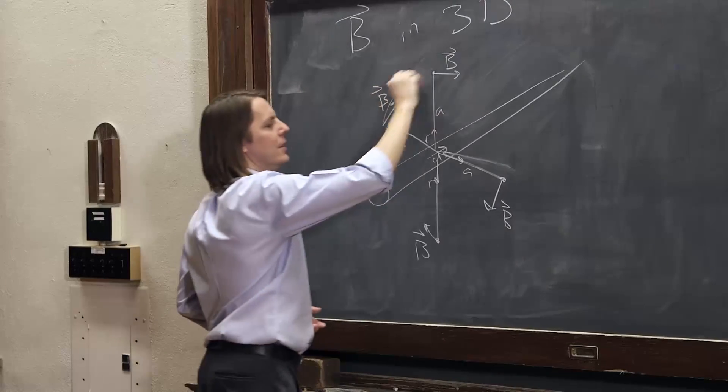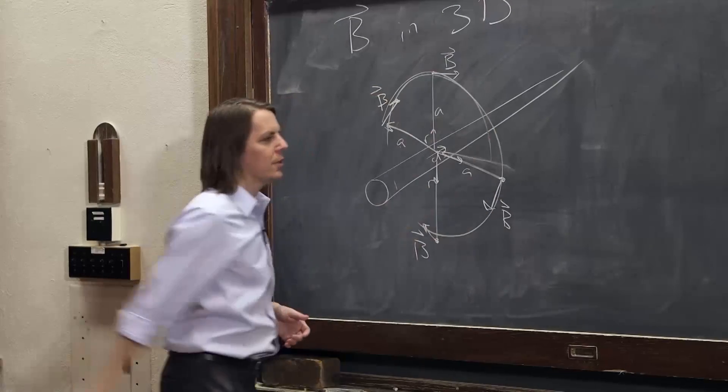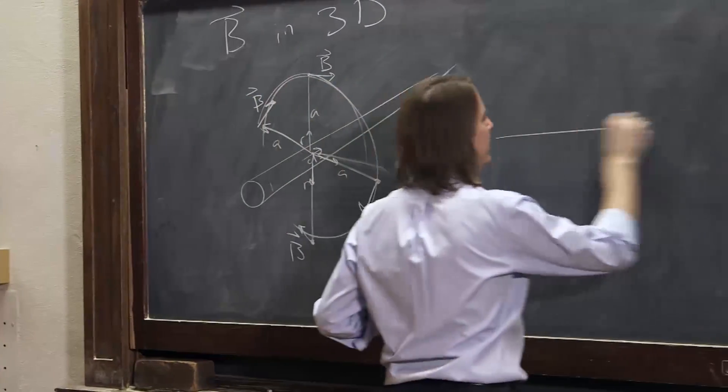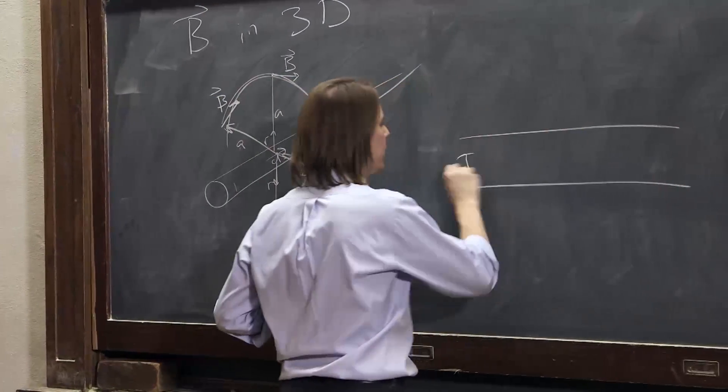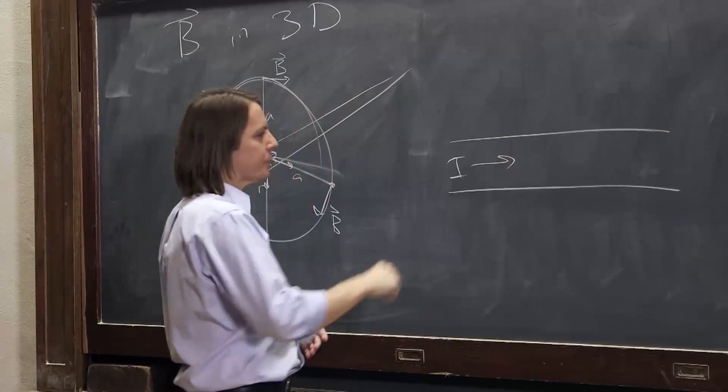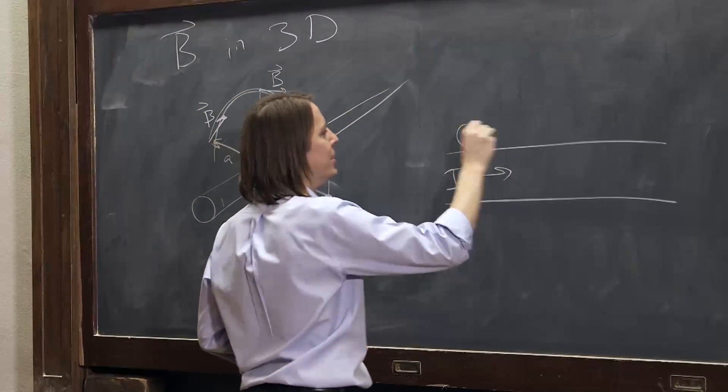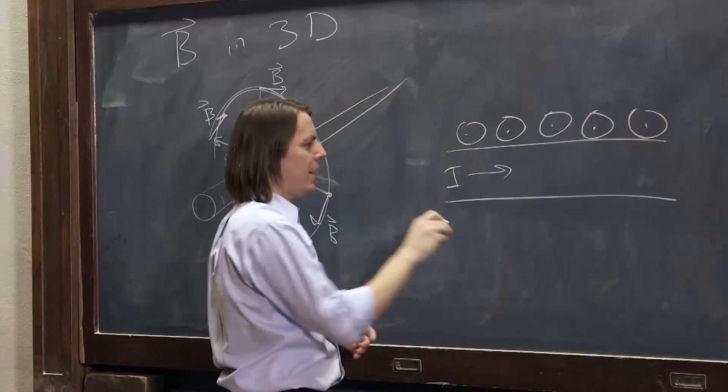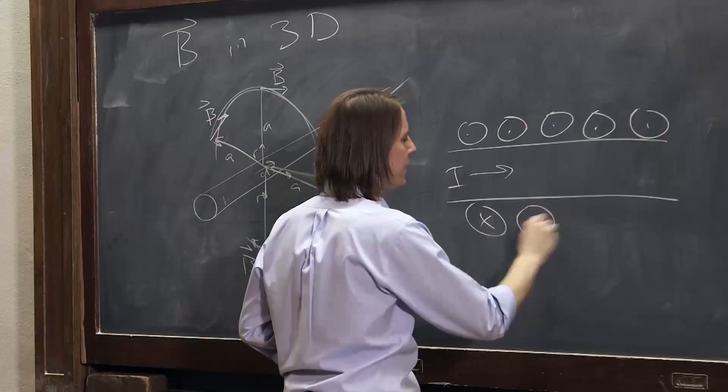So you can see what's going to happen is it goes around, which is exactly what we calculated last time, or what we mentioned in the last learning sequence. If we have a wire and the current is going this way, we just calculated you get a big B field here coming out and going in right near the surface of the wire.